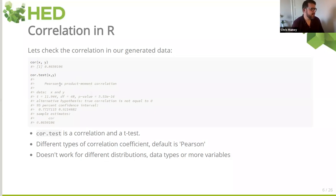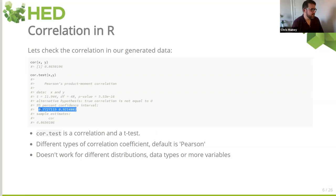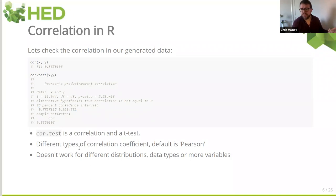If you do cor.test instead of cor, it gives you the output with t-values and a p-value. That p-value is to the minus 16, so it's a significant correlation. It's also giving you a 95% confidence interval: with 95% confidence we can say the correlation of that dataset is somewhere between 0.772 and 0.921, with our estimate being 0.865. These are really useful tests if you have two variables that are reasonably normally distributed. But if it gets more complicated — you've got more than one variable — you'll probably want to go straight for the regression approach.